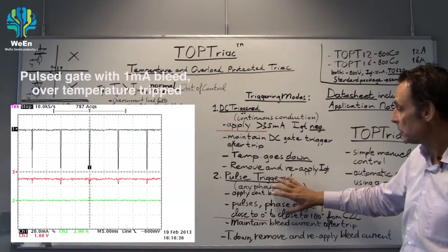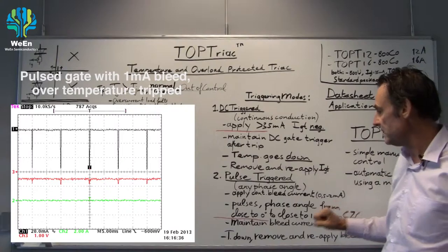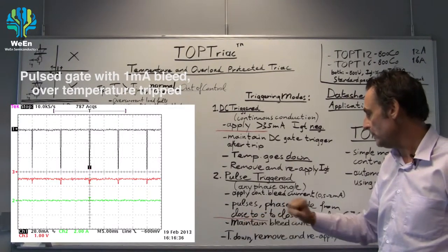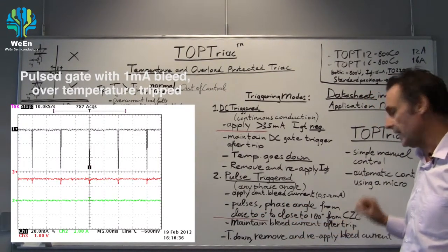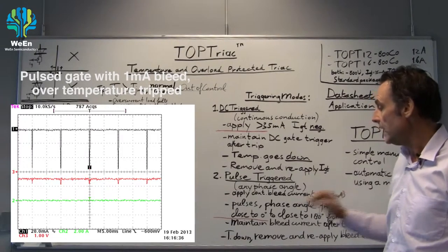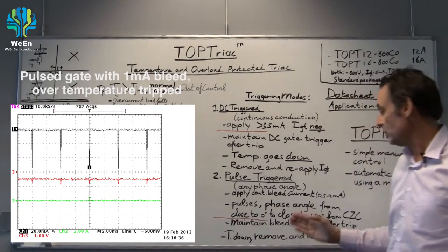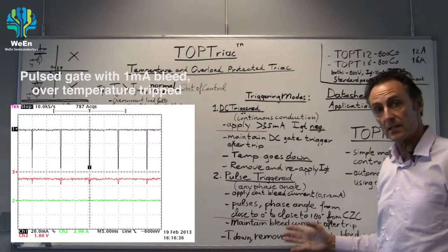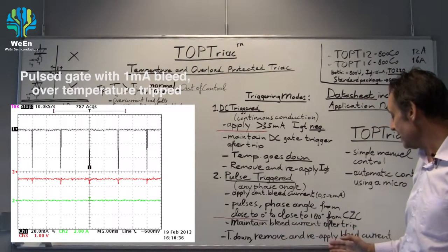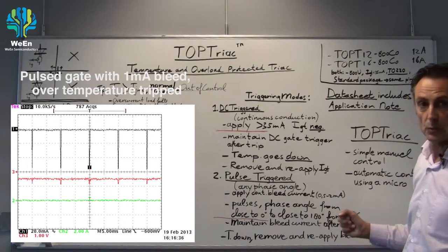If the TRIAC switches off in an over temperature event, we maintain the bleed current after the switch off and we let the temperature go down. Then we remove the entire gate control and reapply and the TRIAC will switch on again.